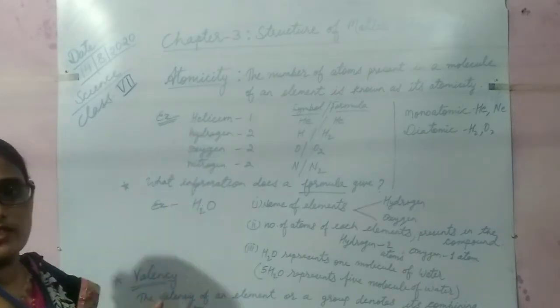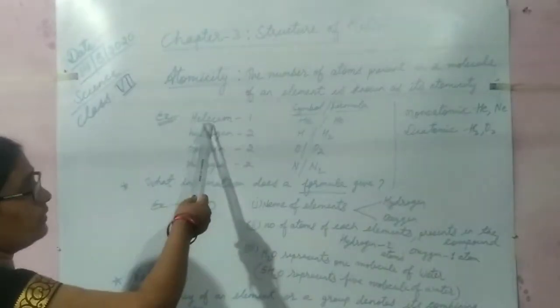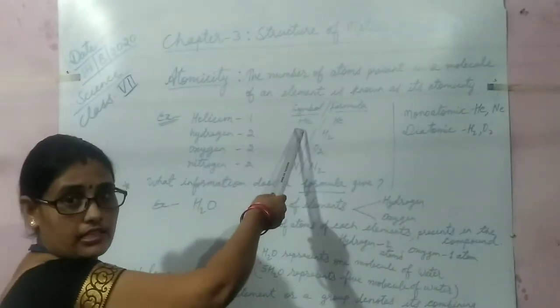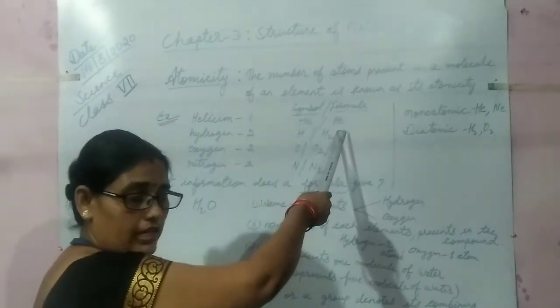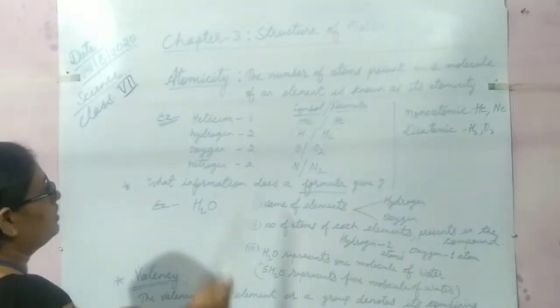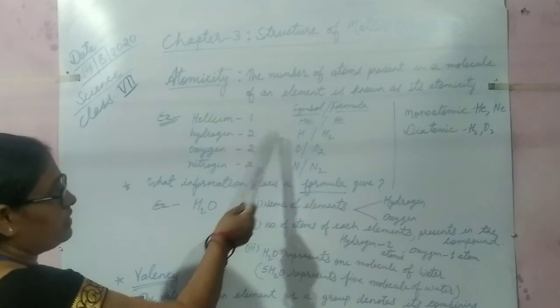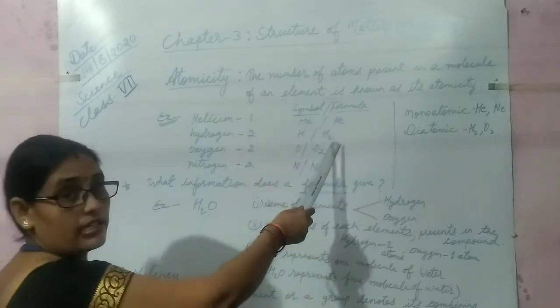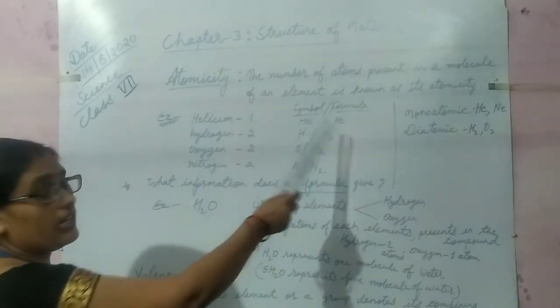Now, some examples are given here. Helium: symbol is He, formula is also He. The chemical formula of monoatomic elements remains the same as their symbol. But hydrogen: symbol is H and formula is H2. They are diatomic.